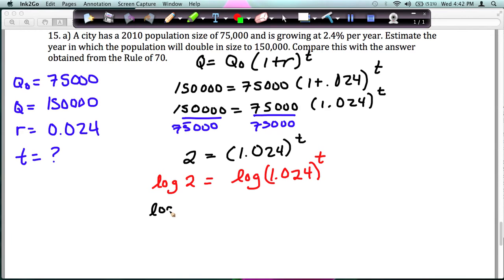You could have written that right away if you wanted, but I just wanted to show you this step. So the T comes out in front, and then you have log of 1.024. You can now get T by itself by dividing both sides by this log of 1.024.